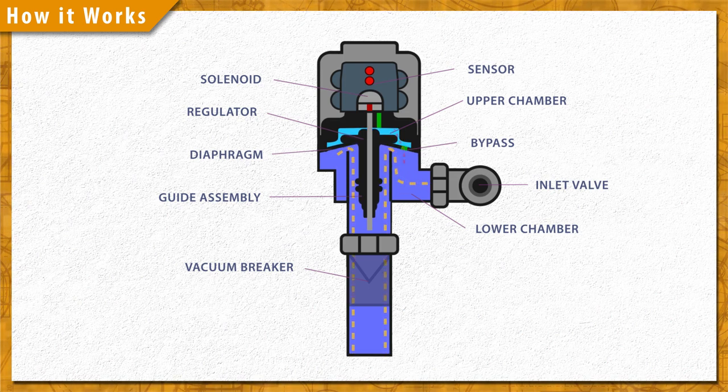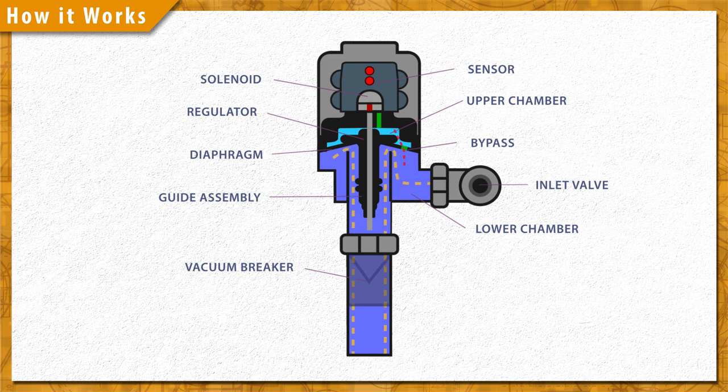During the flush, some of the water is forced back into the upper chamber through a small bypass hole in the diaphragm.